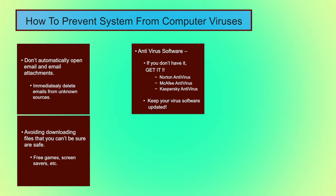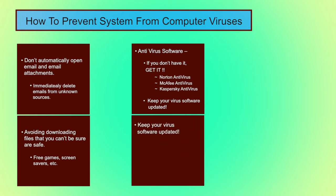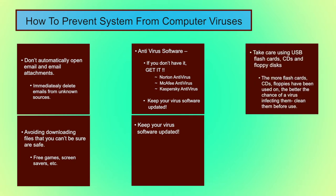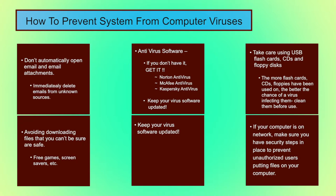Third, use different antivirus software and keep your antivirus updated. Purchase a licensed version of antivirus that has a key. Fourth, configure your antivirus software to boot automatically on startup and run at all times. If you are not using updated antivirus, new variations of viruses can be skipped during checks. Also, take care when using USB flash drives, CDs, floppy disks, and external hard drives. Clean them before use. If your computer is on a network, make sure you have security steps in place to prevent unauthorized users from putting files on your computer.